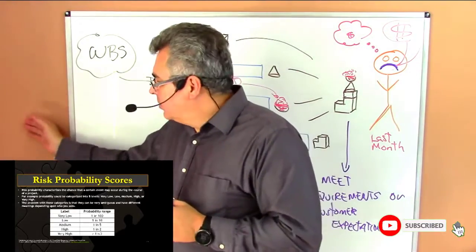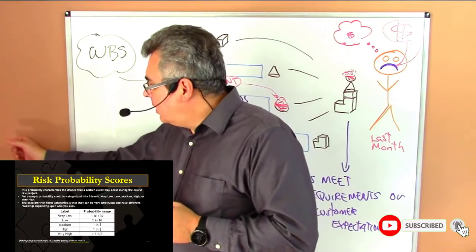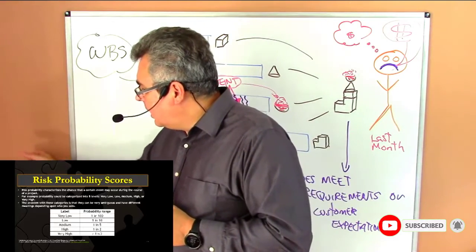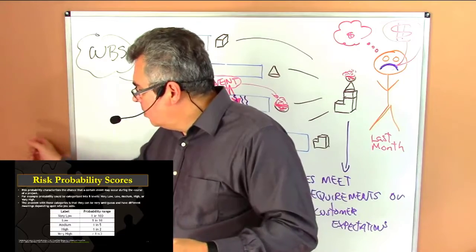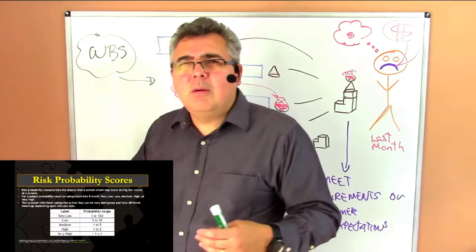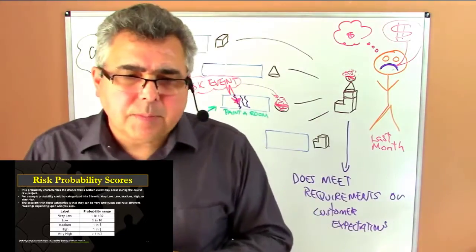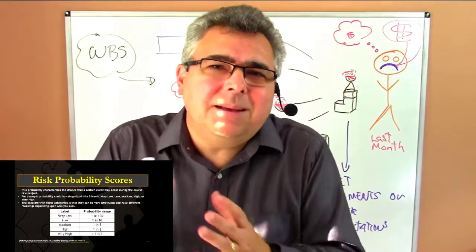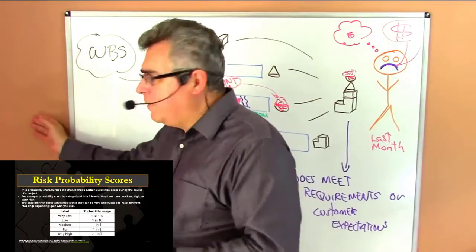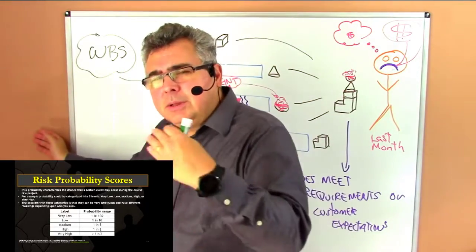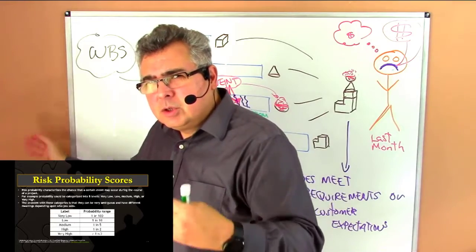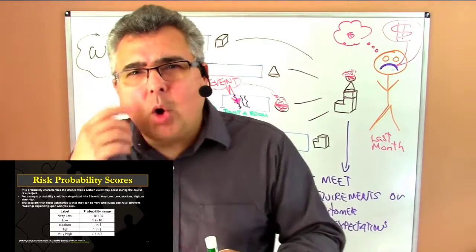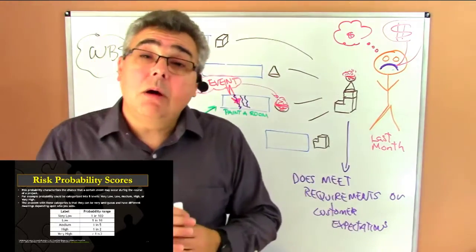The drywall — when I try to paint, sometimes the drywall is damaged, and when I push, I find a hole in the wall. So that's a problem — a big problem. If I find that, I have to spend more money to fix it. It takes more time as well. So that is an impact on time and cost. That's a risk.